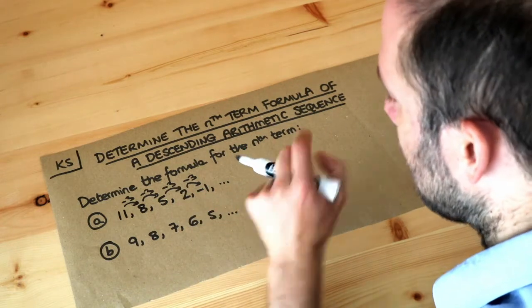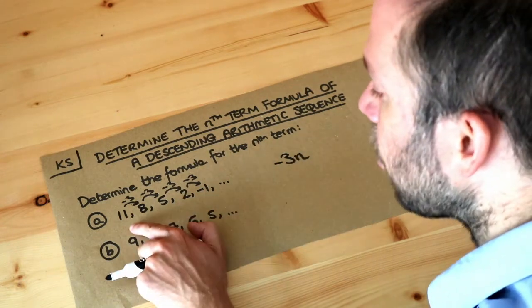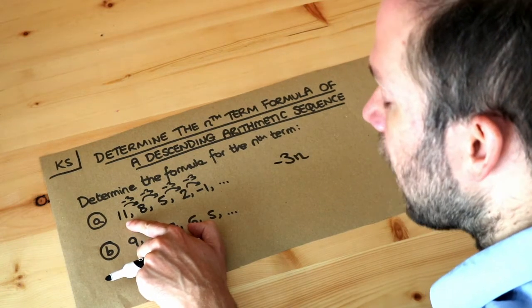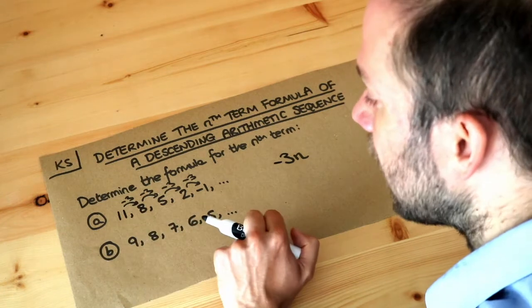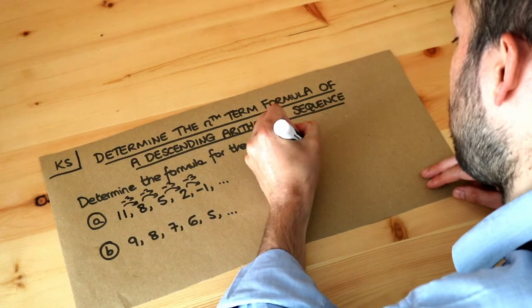Now we've got minus 3 as a first term according to this formula but we don't want minus 3, we want 11. So what do we need to do to correct the minus 3 to get to 11? Well we need to add 14 don't we?